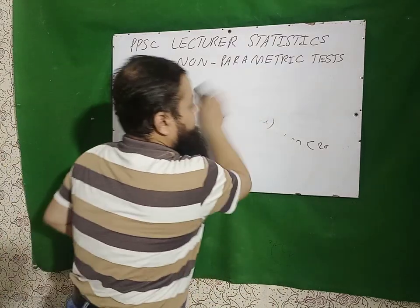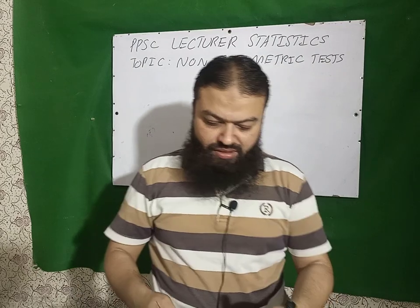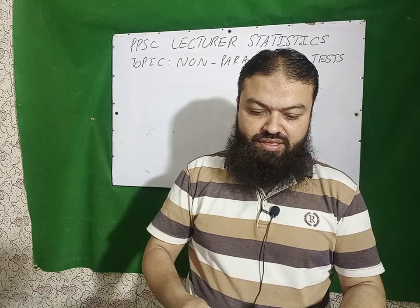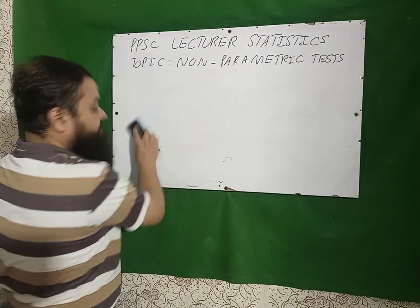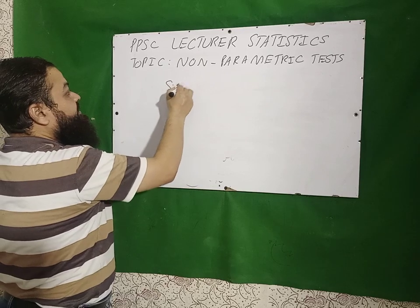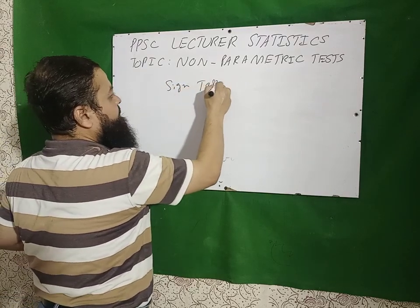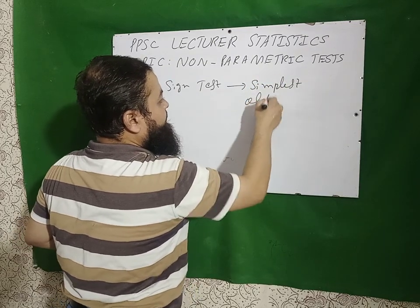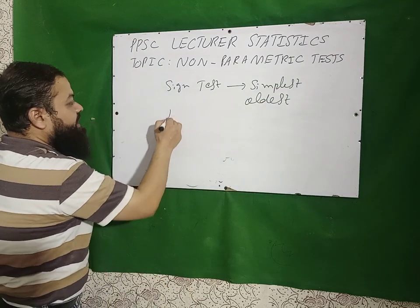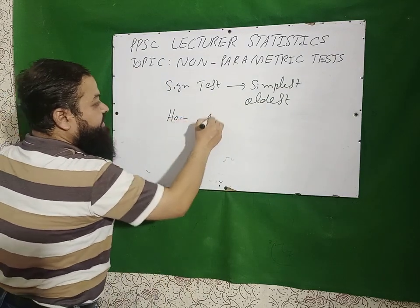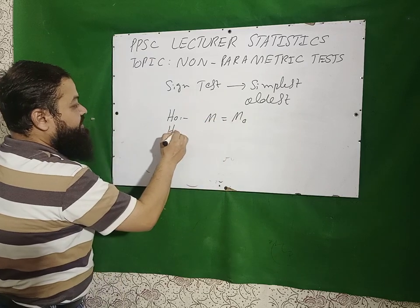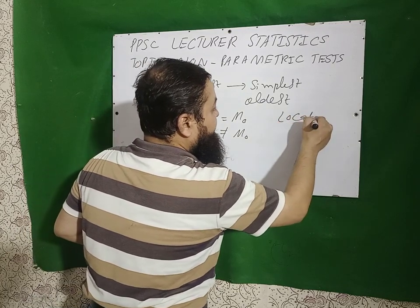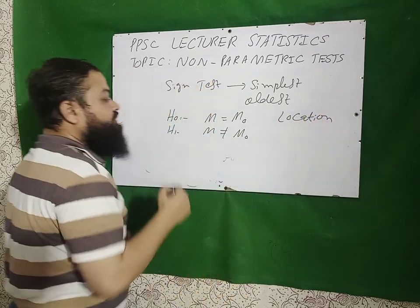First of all, the sign test. The sign test is the simplest as well as the oldest non-parametric test. In the sign test, we make the hypothesis: H₀: median is equal to some specified value; H₁: median is not equal to some specified value. We do the testing of the location parameter — a very important point.